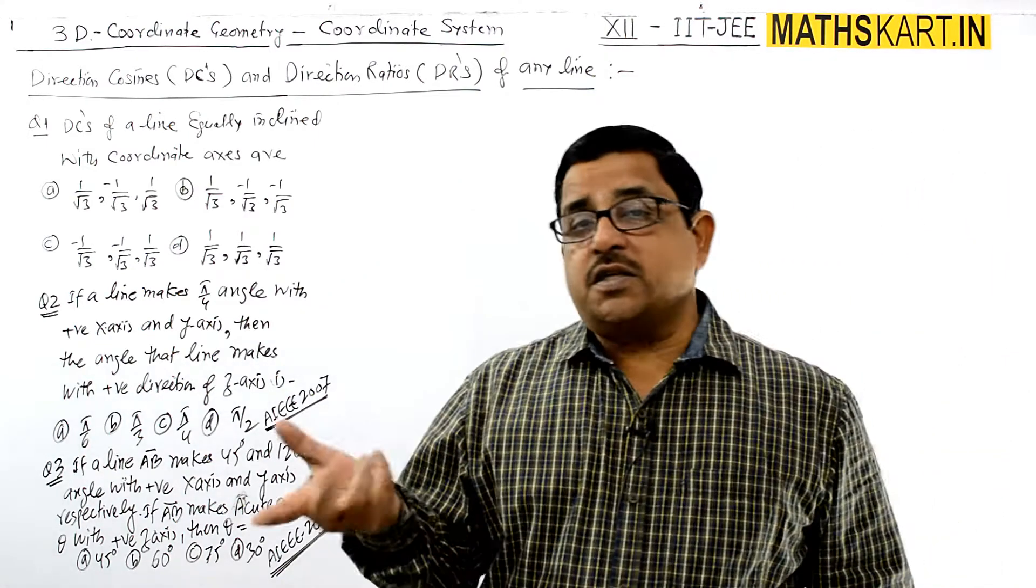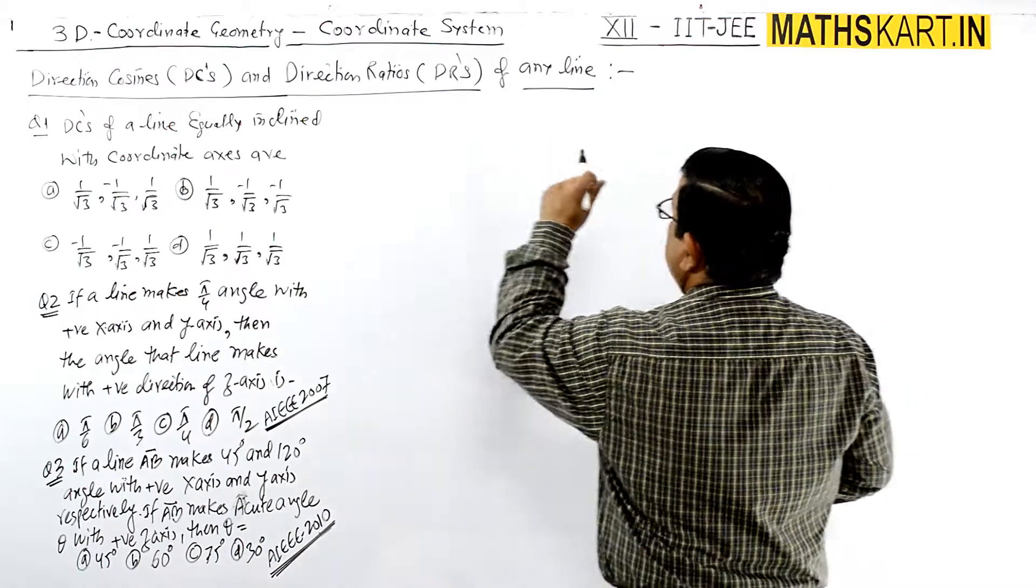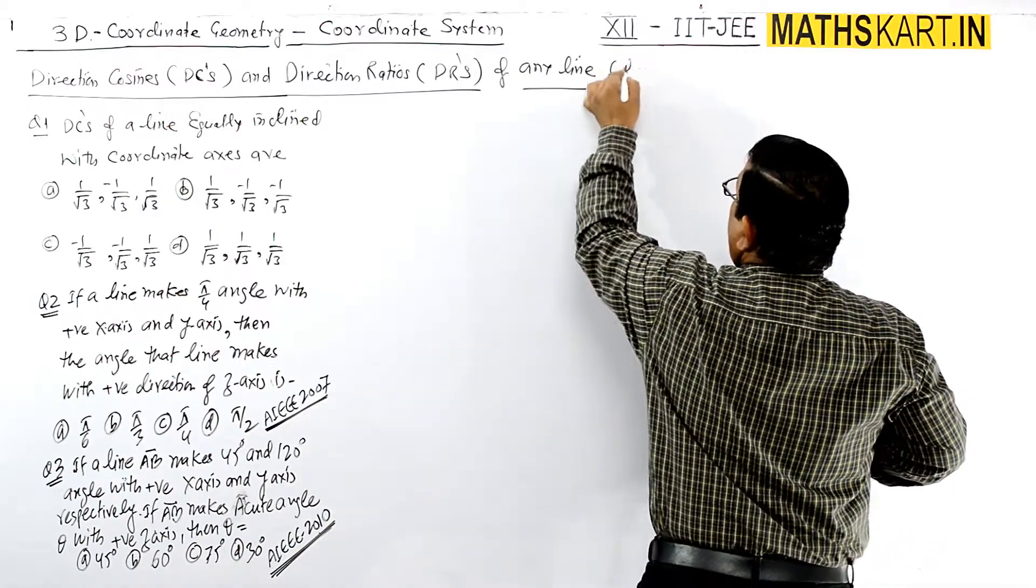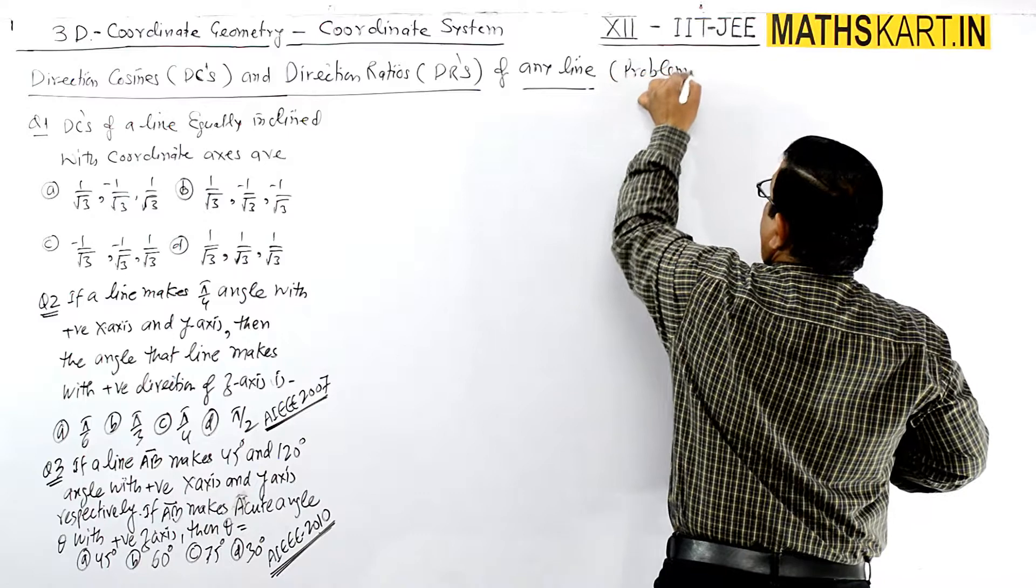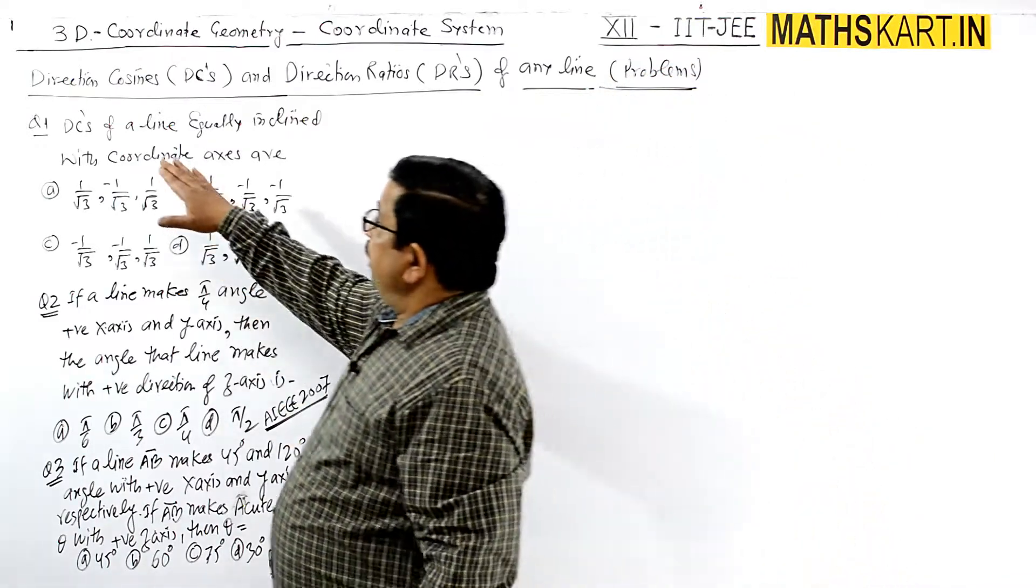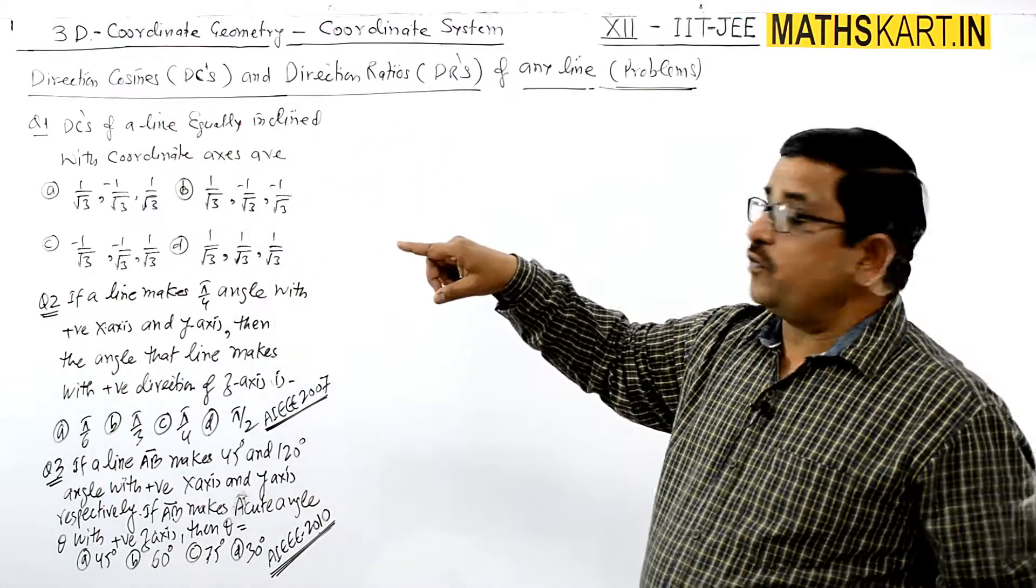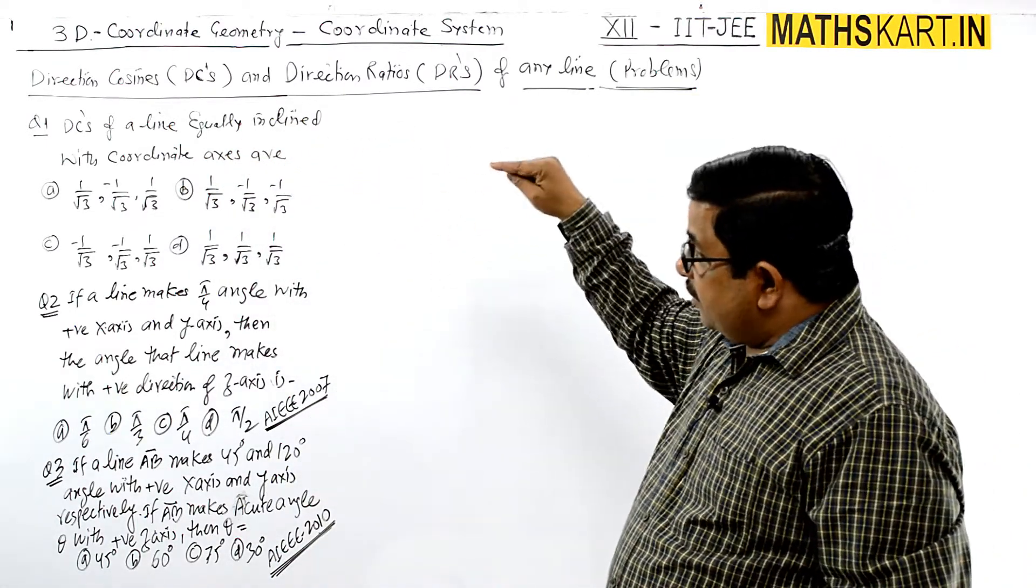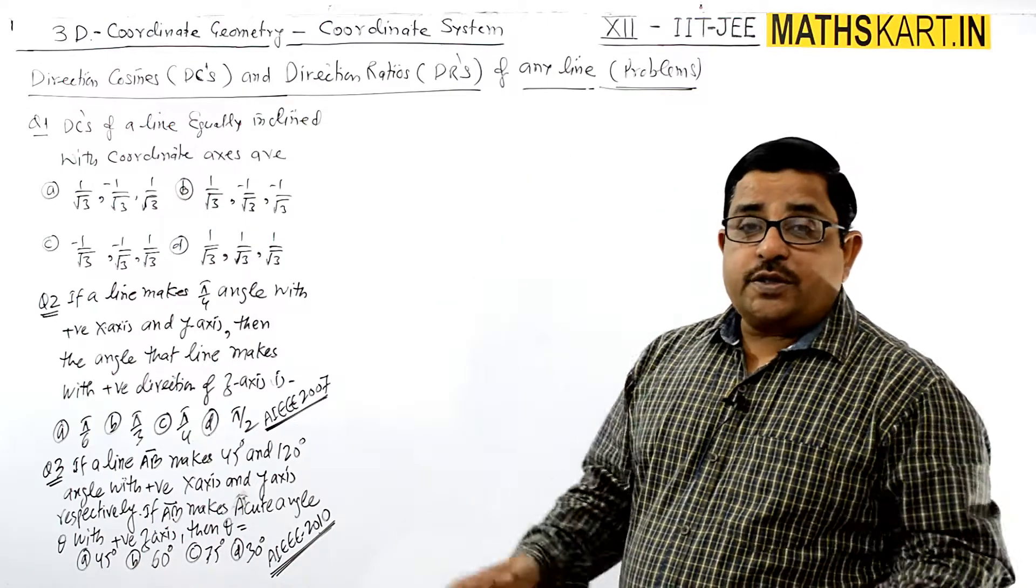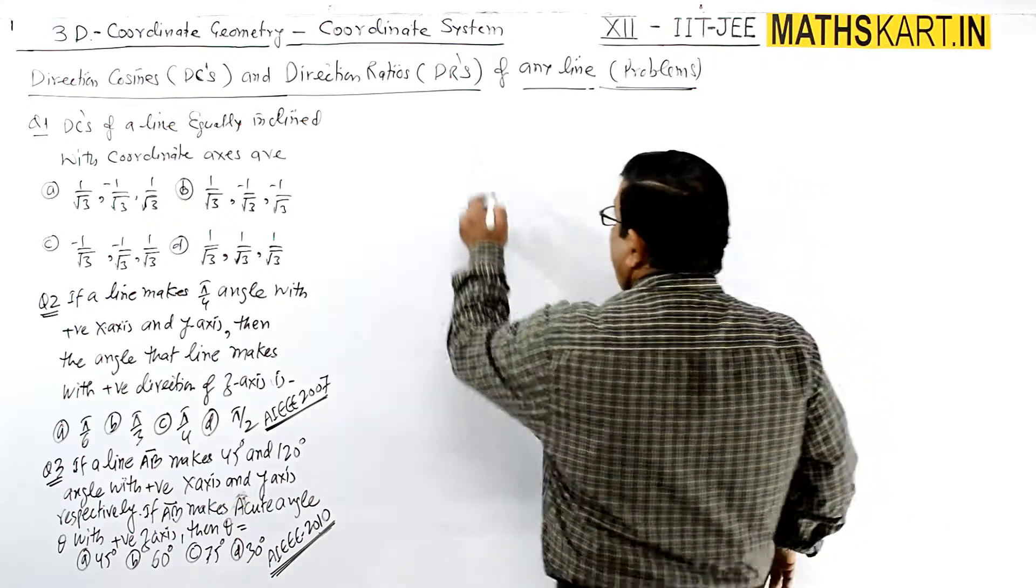Okay, next we have direction cosines and direction ratios problems. First question: find the DCs of a line equally inclined with the coordinate axes. So the information needed is that the line is equally inclined with the coordinate axes.